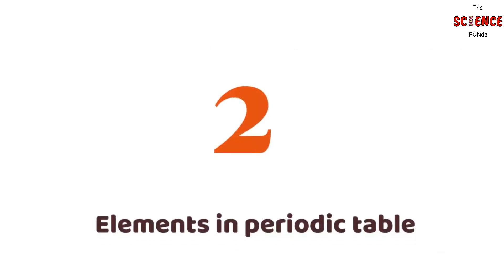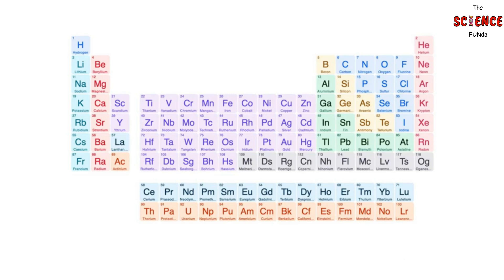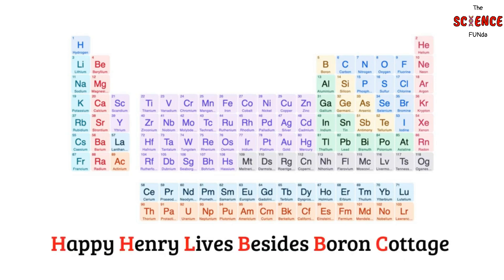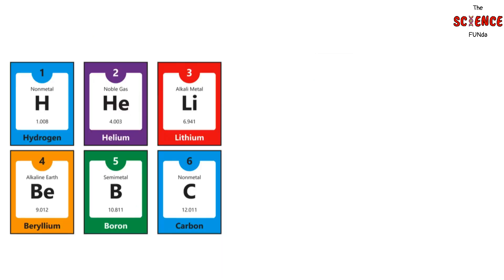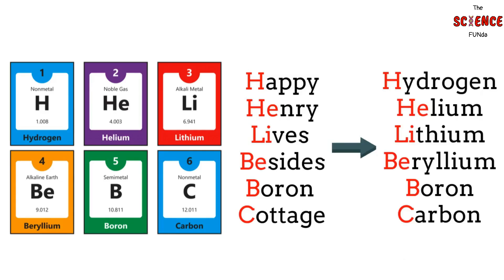Number 2: Elements in the Periodic Table. One of the difficult concepts in science is the Periodic Table of Elements. From symbols and atomic numbers to groups and periods, there is plenty to remember. The mnemonic for the first 6 elements is 'Happy Henry Lives Beside Boron Cottage.' This helps students remember Hydrogen, Helium, Lithium, Beryllium, Boron, and Carbon, as well as their chemical symbols: H, He, Li, Be, B, and C.